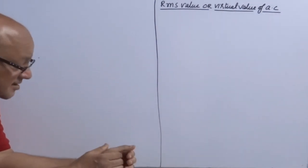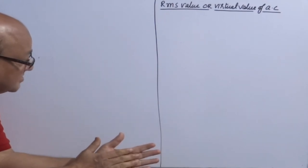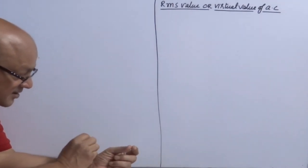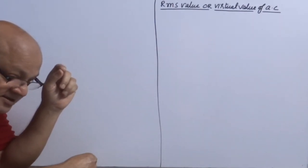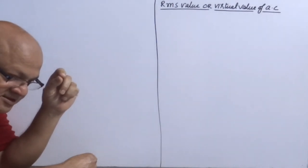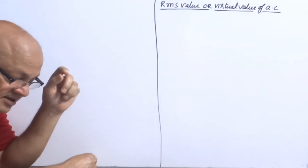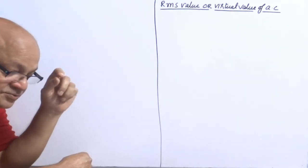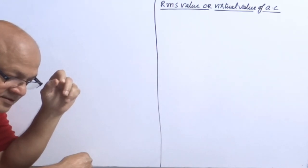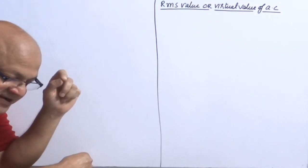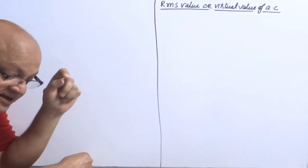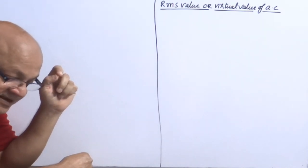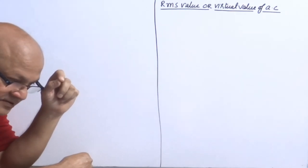RMS value of AC is defined as that value of steady current which would generate the same amount of heat energy through a given resistor in a given time as is done by AC when passed through the same resistor for the same time.